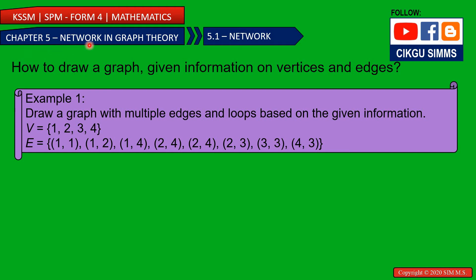Chapter 5: Network and Graph Theory, section 5.1 Network. In this lesson, you are going to learn how to draw a graph given information on vertices and edges. The question will give you information on the vertices and also the edges, and based on this information you need to draw a graph. Let's see example one.